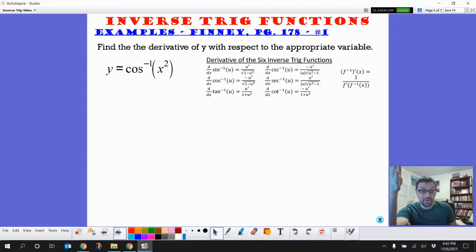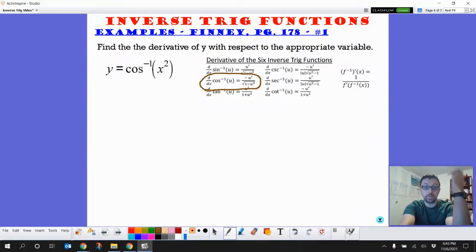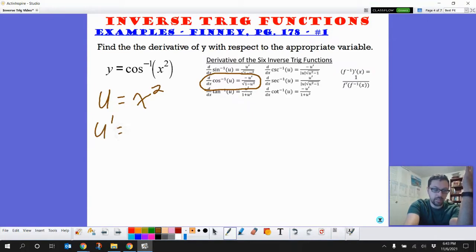So we wanted to find the derivative of cosine inverse composed with an x squared. Now we could find the derivative of cosine and shove the cosine inverse. No, we're not doing any of that. We're just going to do this thingy that's here. So we just got to do this thing. So our inside part u is x squared, so u prime is going to be 2x.